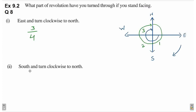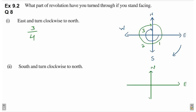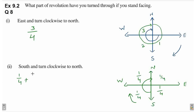Second part hai south and turn clockwise to north. Ab again hum pehle aise directions draw kar lete hain. This is north, this is east, this is south, this is west. Question hai ki currently hum south facing hain, clockwise direction mein humne ghoomna hai — matlab is direction mein. And south se aise jaayenge north tak. Total kitne parts of revolution humne cover kiye? Every part is one by four. So yahan par humne kitne parts cover kiye? One by four plus one by four. So one by four plus one by four hota hai one by two.